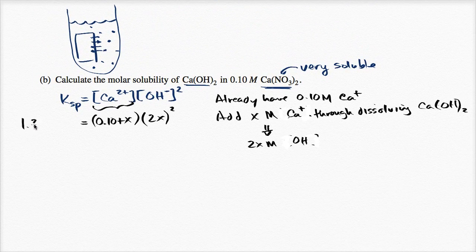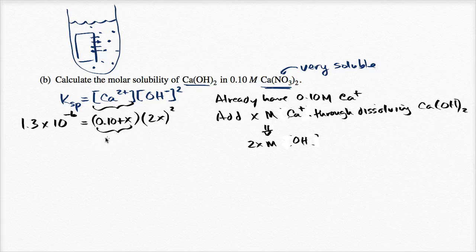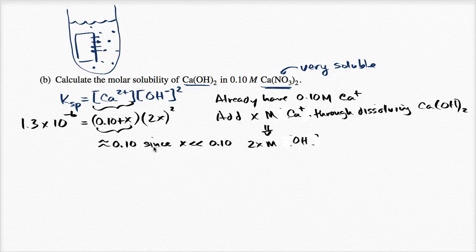So we have 1.3 × 10⁻⁶ equals (0.10 + x) times (2x)². If you try to solve this outright it gets complicated — you end up with an x² term and an x³ term. The simplifying assumption we make, especially because calcium nitrate is so much more soluble than the hydroxide salt, is that x is much smaller than 0.10, so (0.10 + x) ≈ 0.10.